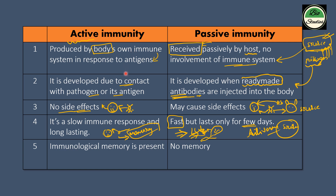Active immunity has immunological memory, but passive immunity does not. In active immunity, the host body slowly identifies the bacteria or pathogen. The B cells become active and form memory cells. So with active immunity, the host body forms memory cells that help identify and respond to future pathogen attacks.